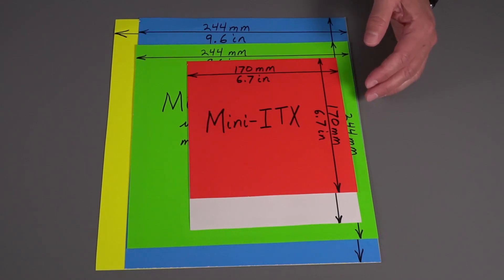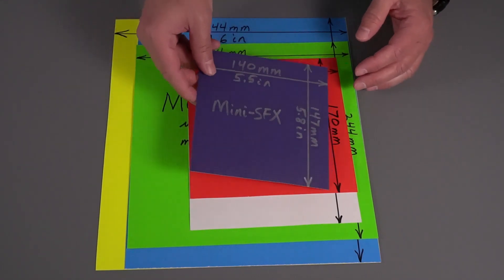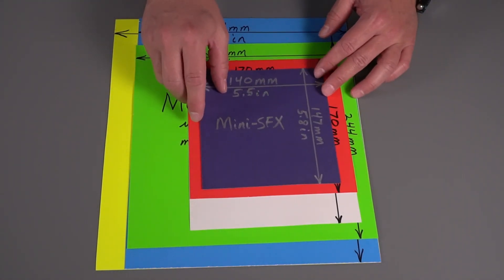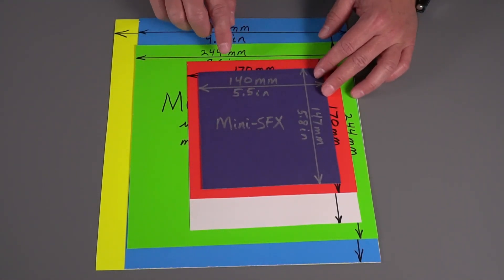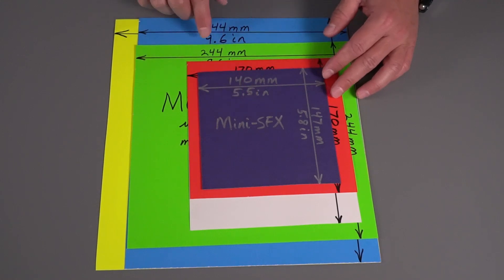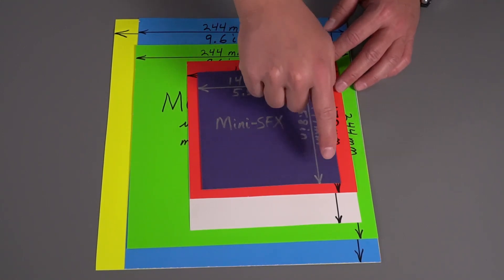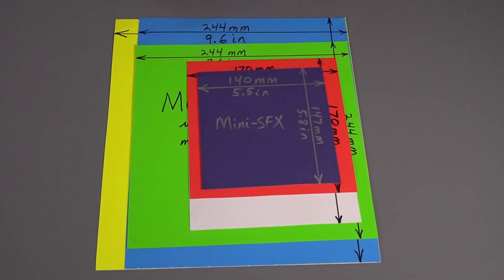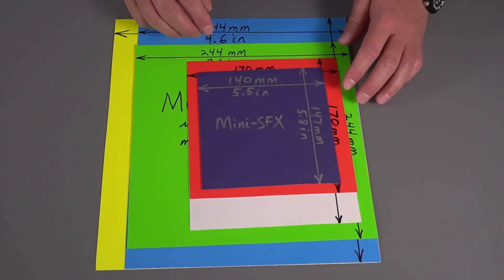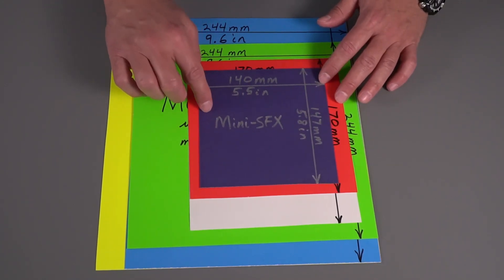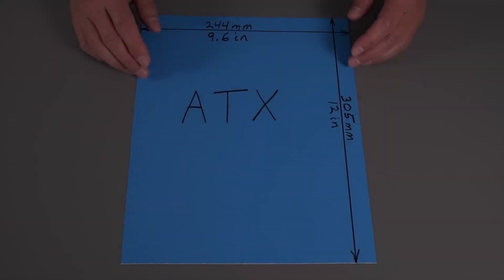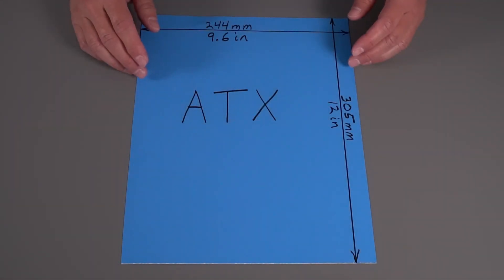If you're really looking for a small build, you might see this form factor called the Mini SFX, written with the dash: 140 millimeters by 147 millimeters, or 5.5 by 5.8 inches. It's unlikely to see this, but it might come up if you're looking for a really, really small build.